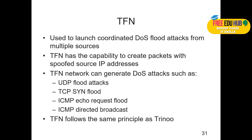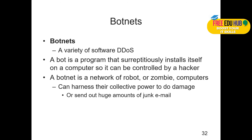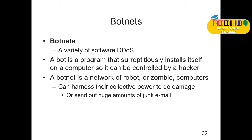TFN (Tribal Flood Network) is used to launch coordinated DoS flood attacks from multiple sources. TFN has the capacity to create packets with spoofed source addresses. The TFN network can generate DoS attacks such as UDP flood attacks, TCP SYN flood attacks, ICMP echo, or directed broadcast attacks. TFN allows the same principle as Trino.